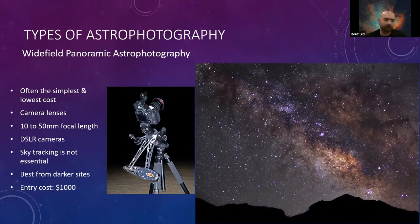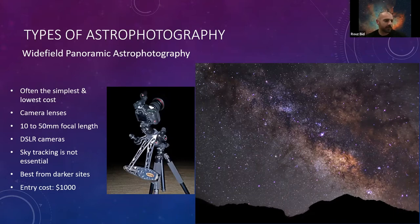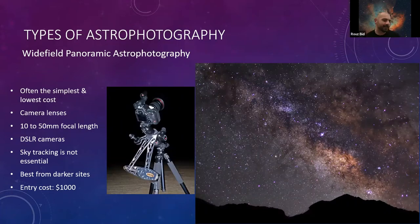I'll start with different kinds of photography. The basic setup is wide-field panoramic — a lot of people start this way, it's very easy to get into at very low cost. Basically it's a DSLR camera; you can get cameras modified for deep sky, lenses in the 10 to 50 millimeter range, very light. You don't really need a tracking mount — these are called sky trackers. You're better off at a dark site because light pollution will really ruin these images, though there are filters. The entry point is about $1,000.